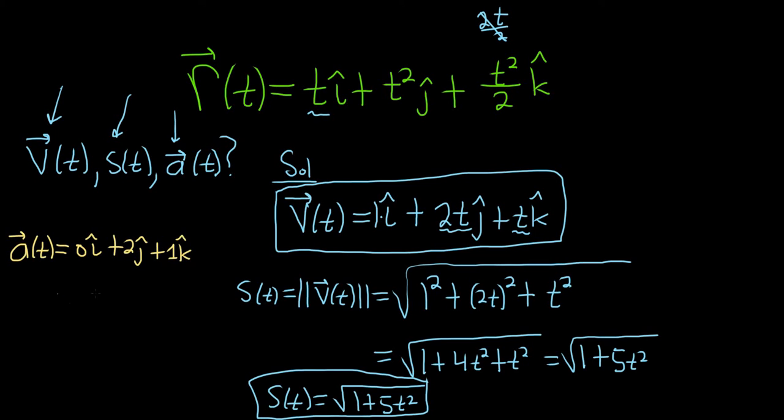No one leaves their answers like this, so let's write it as 2 j hat plus k hat. That's our acceleration vector valued function.